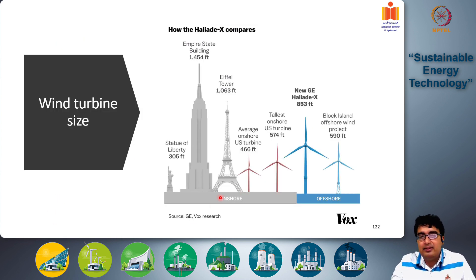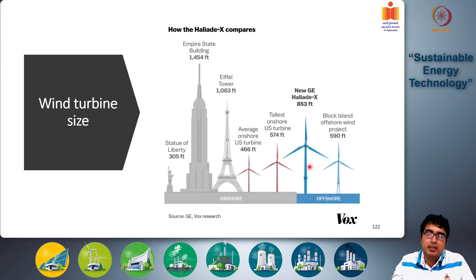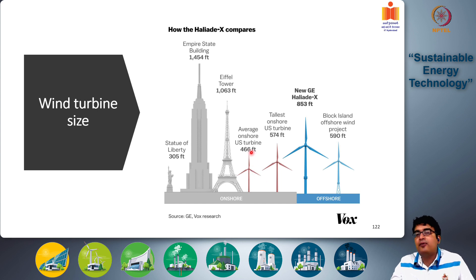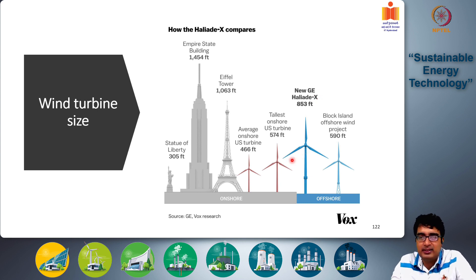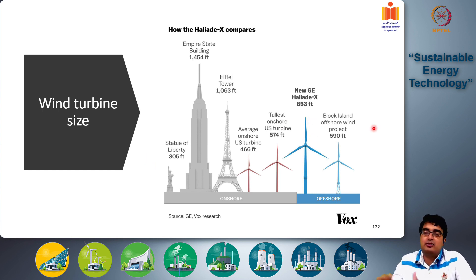Modern wind turbines are now competing with some of the tallest mega-structures in the world. The Statue of Liberty stands at 305 feet, while the average US onshore wind turbine height is 466 feet and the tallest onshore turbine reaches 574 feet. The Eiffel Tower is 1,063 feet; the GE Haliade-X offshore wind turbine reaches 853 feet — among the tallest structures on Earth today.